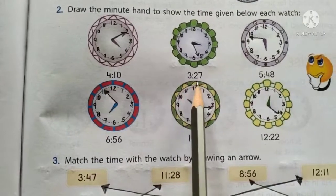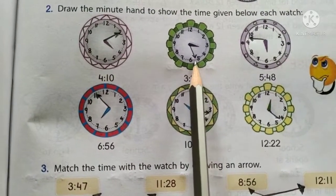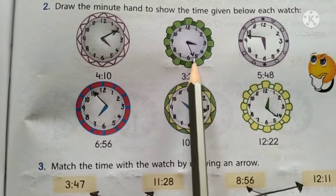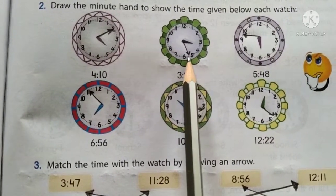The time is 3, 27. So the minute hand will be at the second dot after 5. Because 5 is 25, 26, 27.